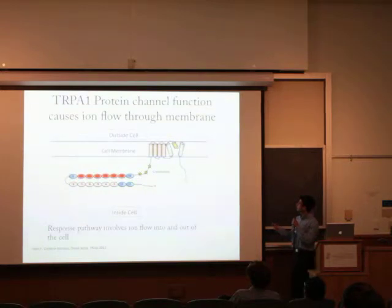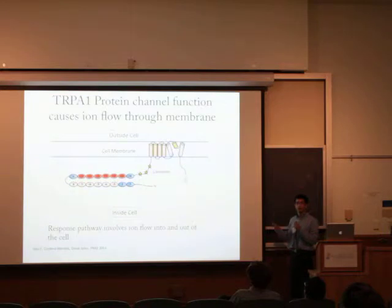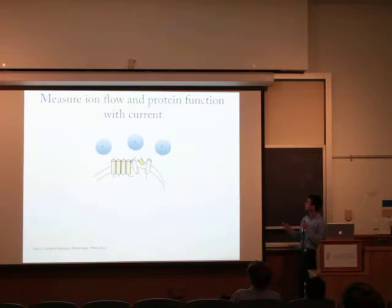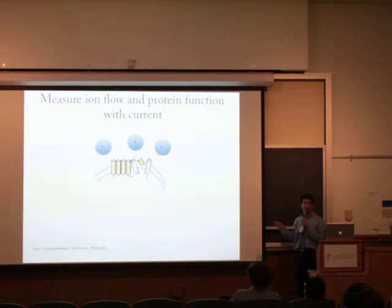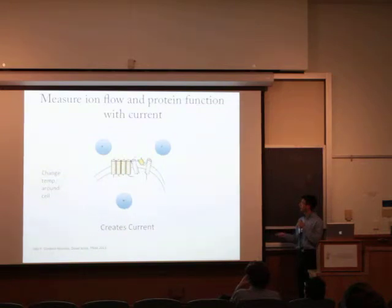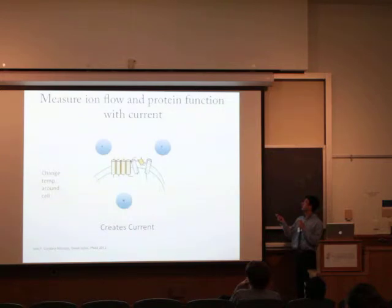This portion exists within the cell membrane and regulates ions through the cell membrane of the cell that TRPA1 exists in. Scientists can use this fact by measuring the current that is created once ions flow through the protein, and then measure the protein function directly. For example, a scientist can change the temperature around the cell containing TRPA1, causing TRPA1 to react, open its pores, and allow ions to flow through the cell membrane, creating a current. By measuring that current, we can directly measure the function of the protein.